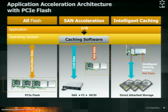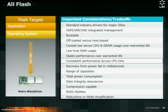So three ways to implement PCIe Flash devices in a database environment. You can use all Flash with no hard disk. You can use Flash as a cache device to implement intelligent caching in front of a SAN, or you can do intelligent caching in front of direct attached storage. Benefits of an all-Flash implementation include booting off the Flash device, low host RAM usage, stable performance over the life of the device, a multiple range of capacities, lower power consumption, and reduction in write amplification.